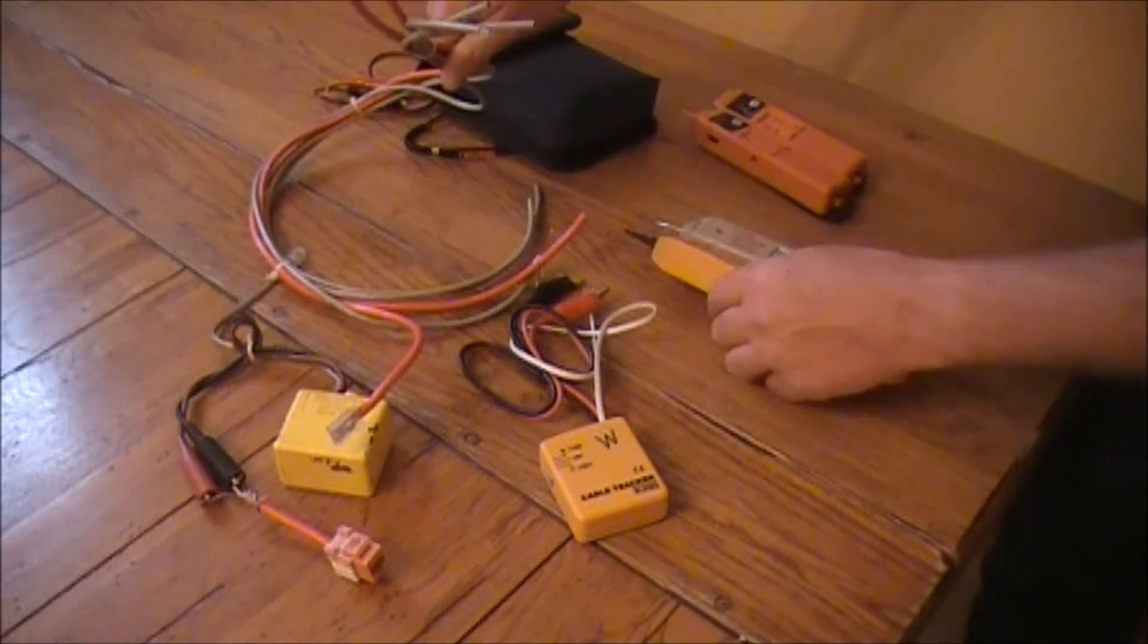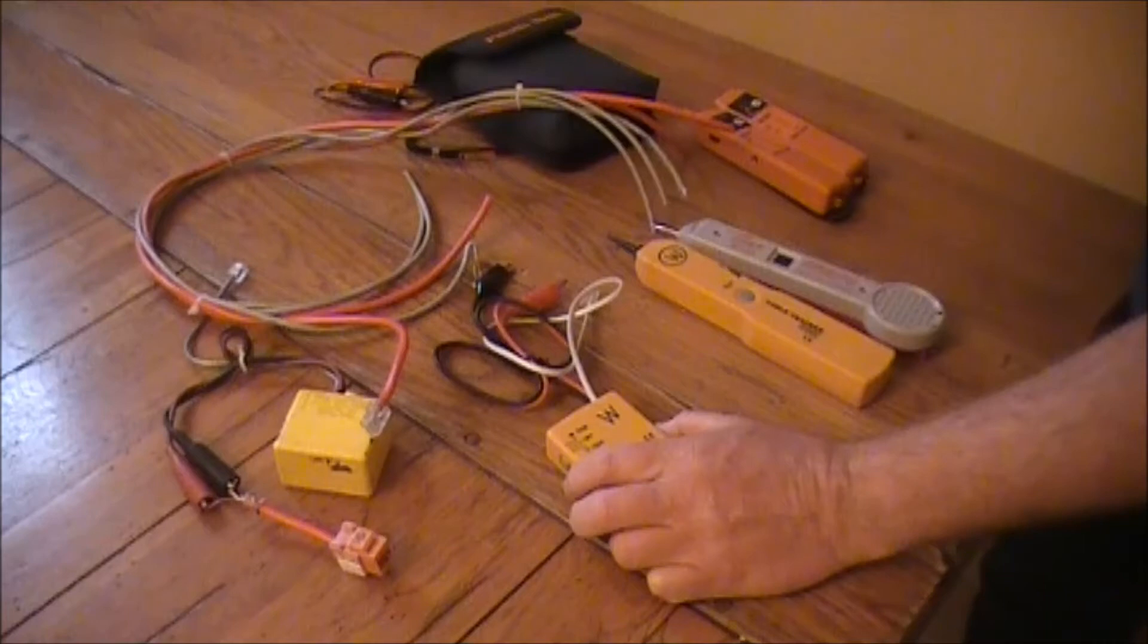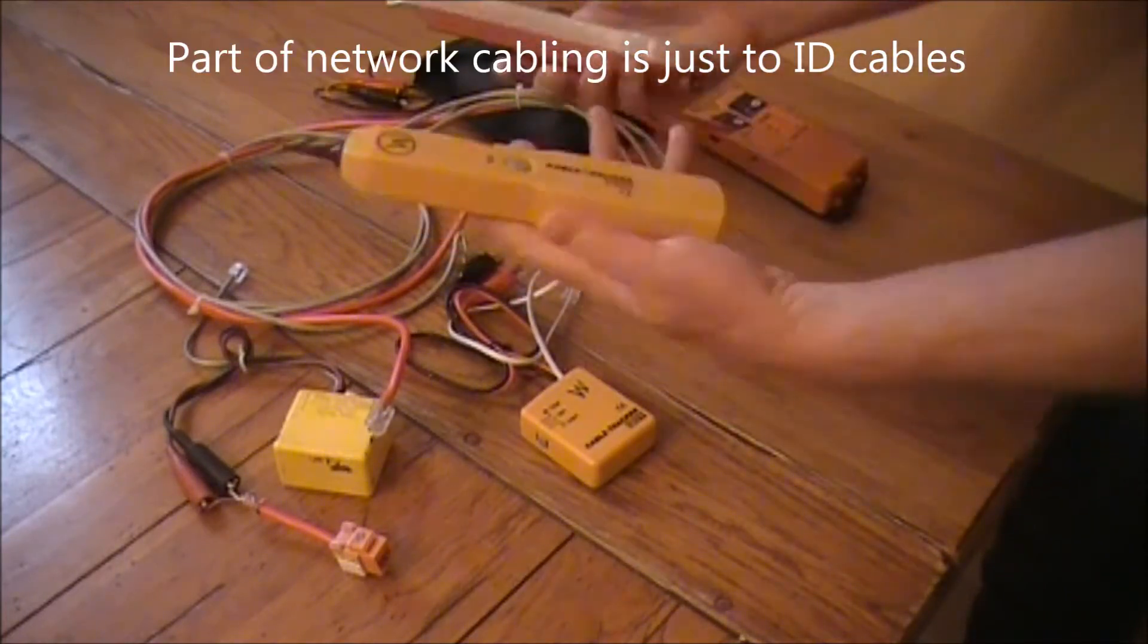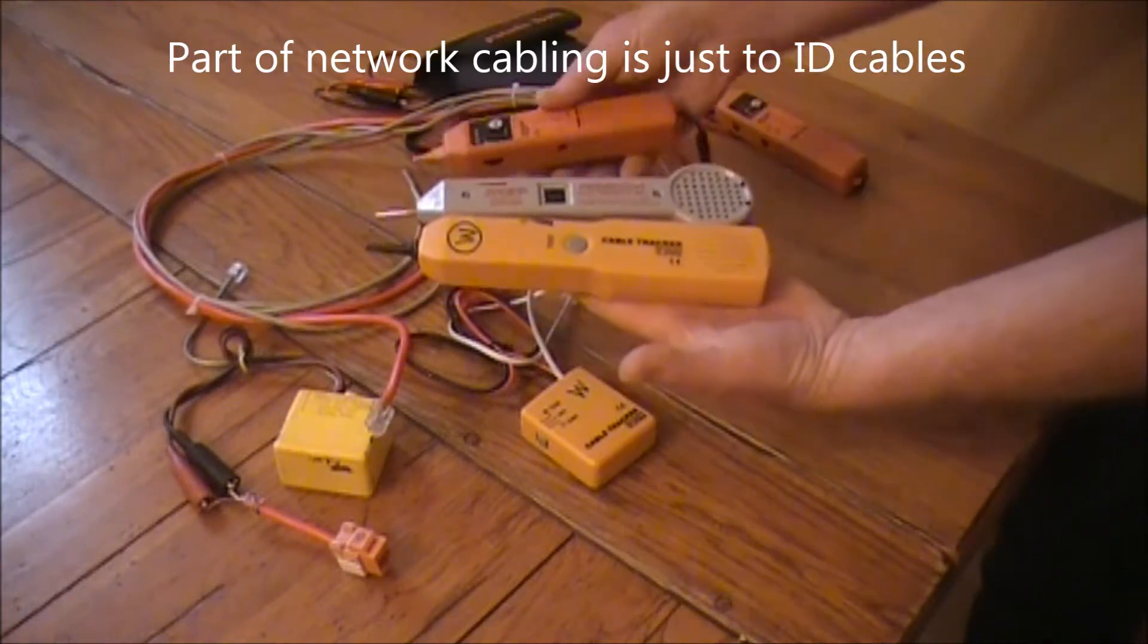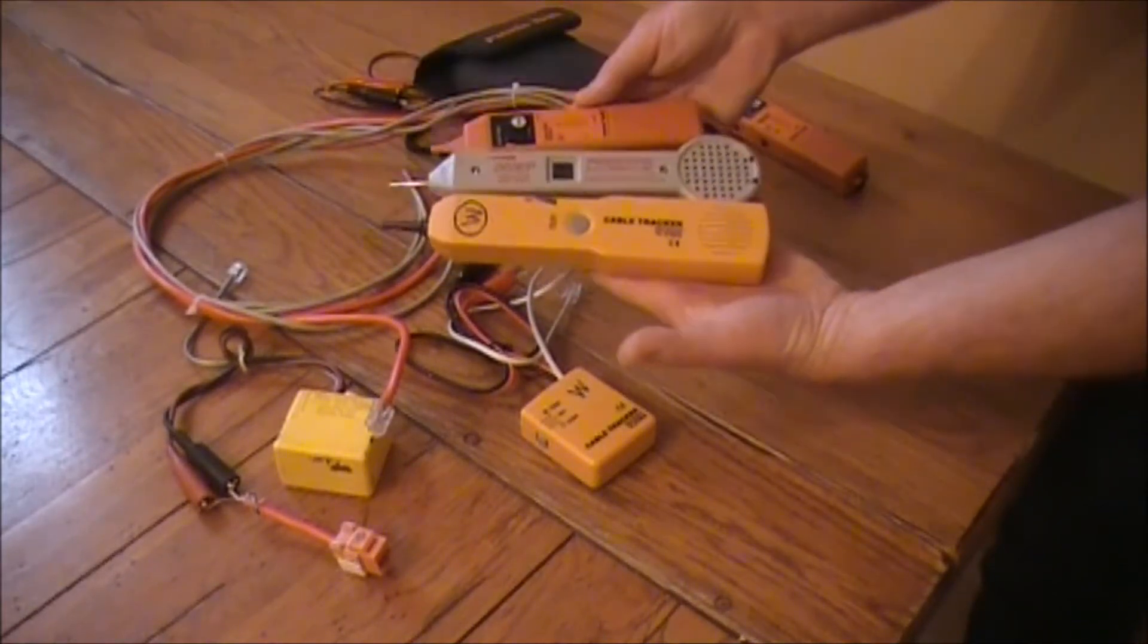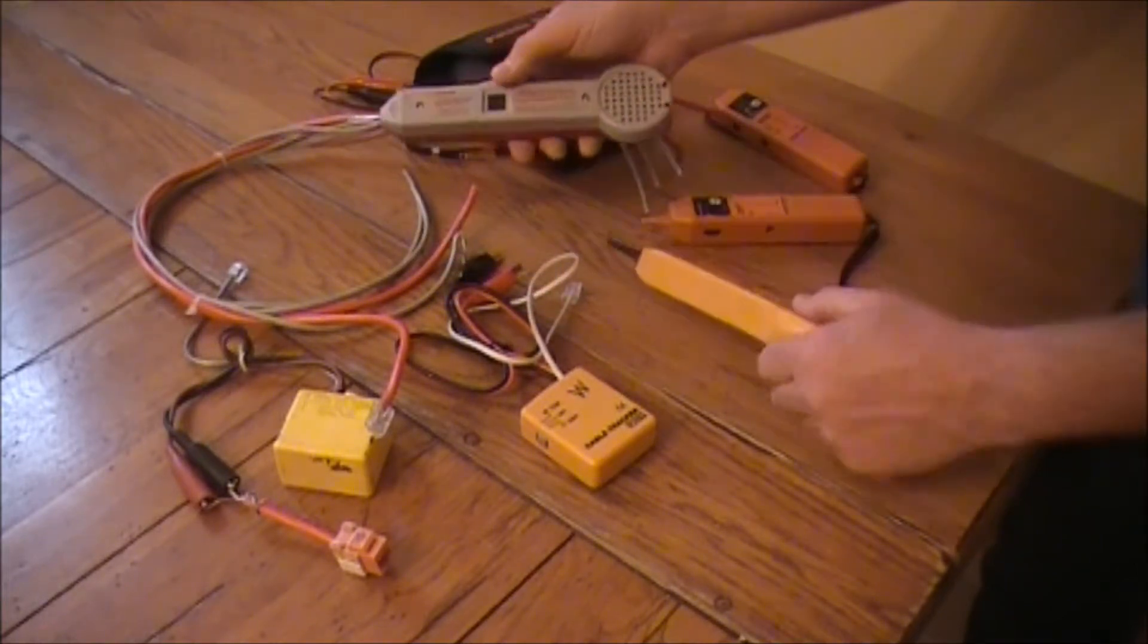So if we're trying to identify a cable, one, two, three, or whatever the case may be, we like to carry at least two testers. We carry a lot of the Fluke stuff, not shown here, but these are some of the other brands. The one that I personally like is the Progressive. The amplifier is very nice.